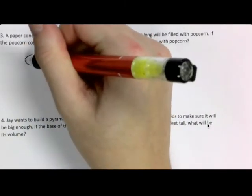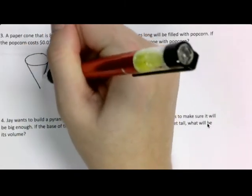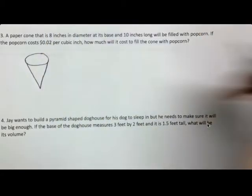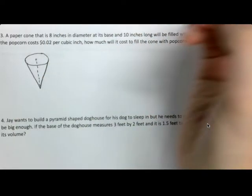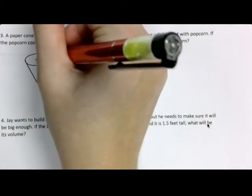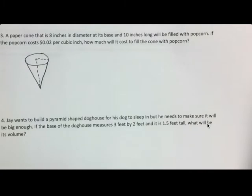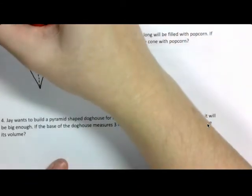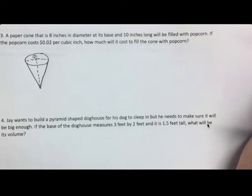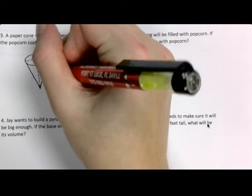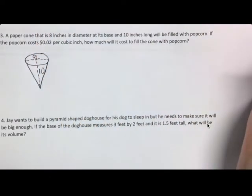So, you draw a circle, and you draw a triangle that connects it. Inside the shape, you have your height. You also have your radius. Now, it says that the diameter is actually 8. So, the whole thing is 8. And the 10 inches long, so that means my height is 10 inches long.